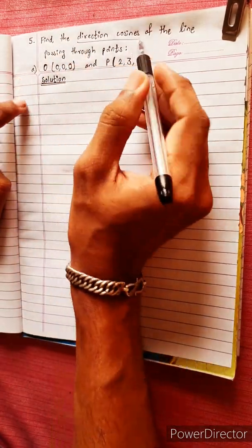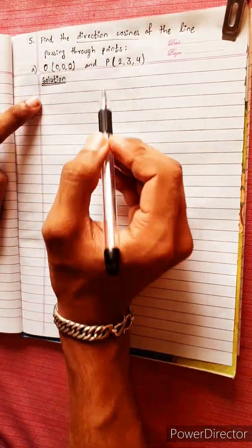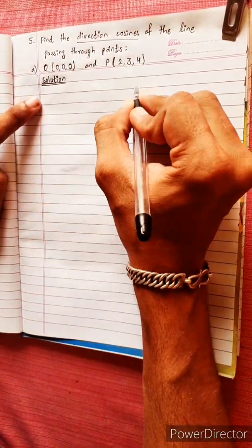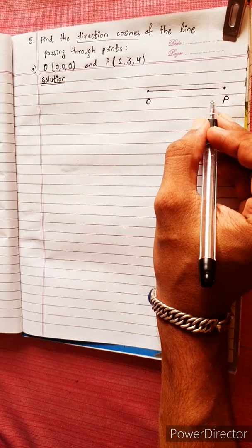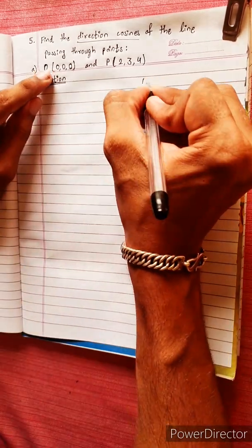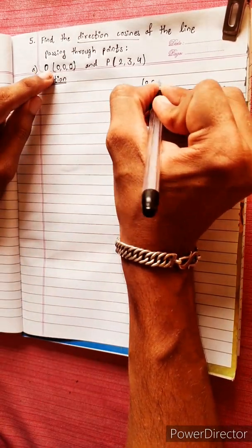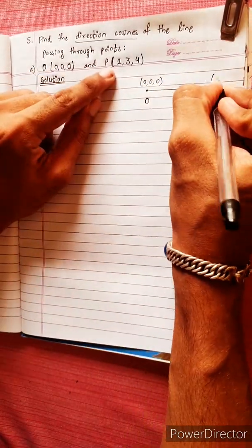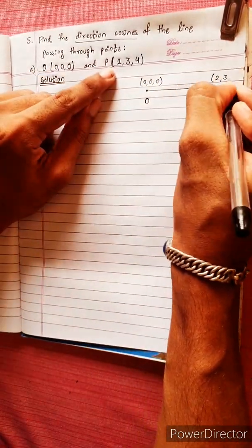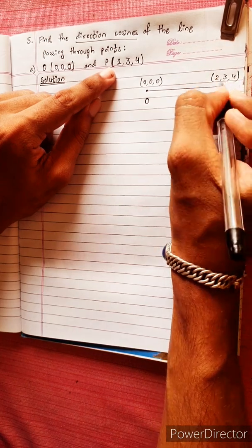Find the direction cosine of the line. The data point is the line OP, where O has the value (0, 0, 0) — it's the origin point — and P is the point (2, 3, 4). We need to find the direction cosines of this line.